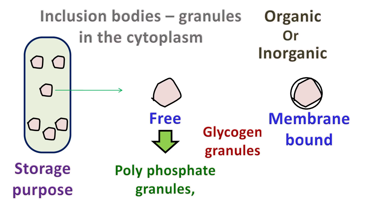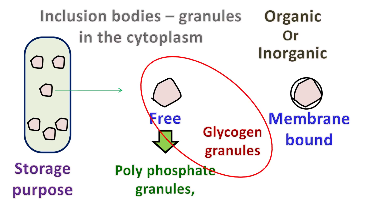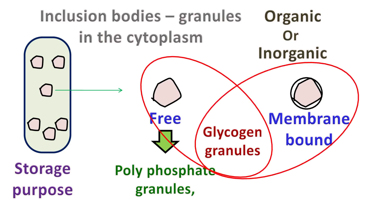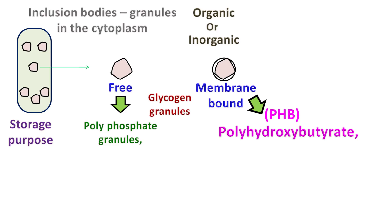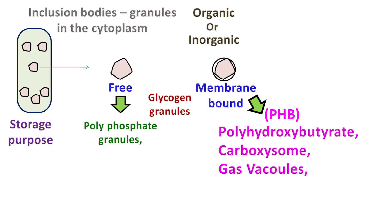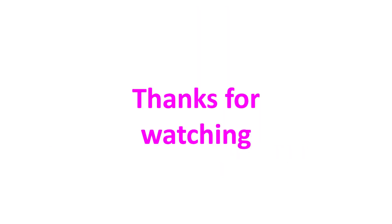The granules of glycogen act as a reserve source of carbon. The glycogen granules may be free or enclosed by the membrane. Examples of other enclosed granules include PHB, carboxysome, gas vacuoles, and sulfur granules.